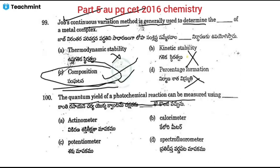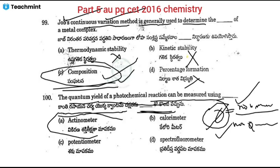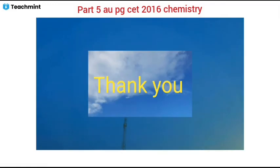Bit 100: The quantum yield of a photochemical reaction can be measured using an actinometer. Quantum yield = number of molecules reacting in a given time / number of quanta of radiation absorbed. If quantum yield is one, one quantum yields one reaction. Quantum yield can be easily measured by the actinometer. Thank you, dear students — have a nice day, see you in the next class.